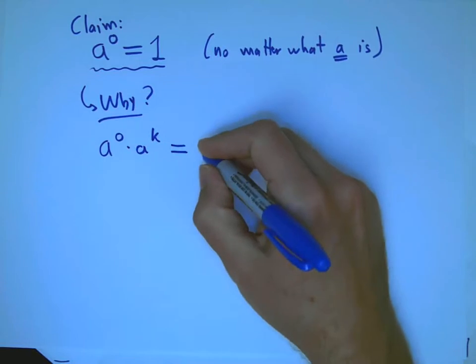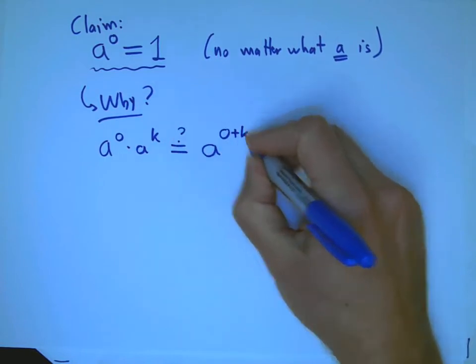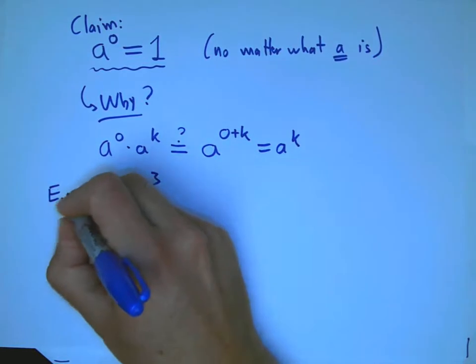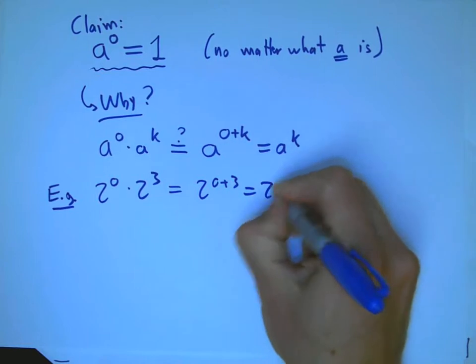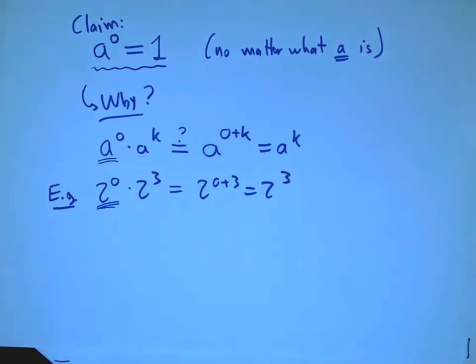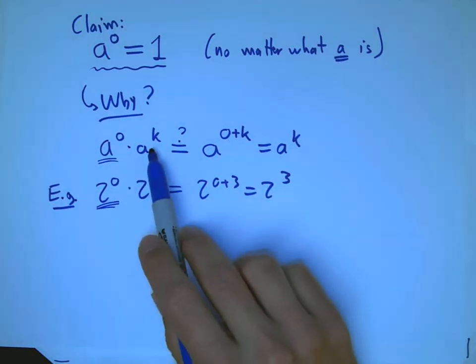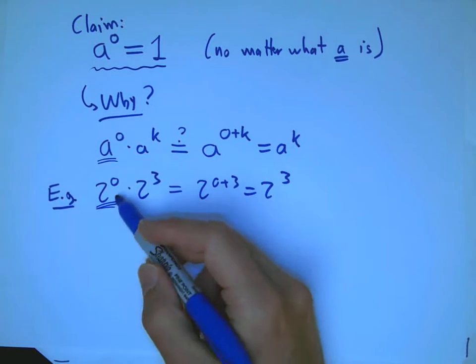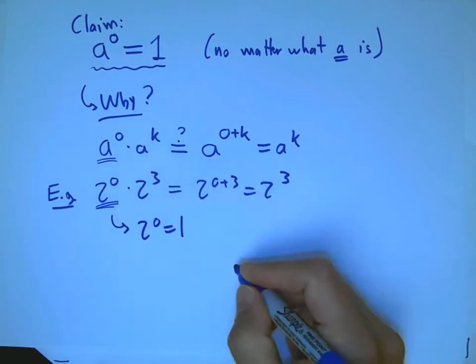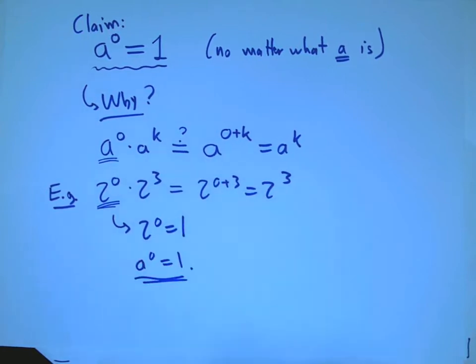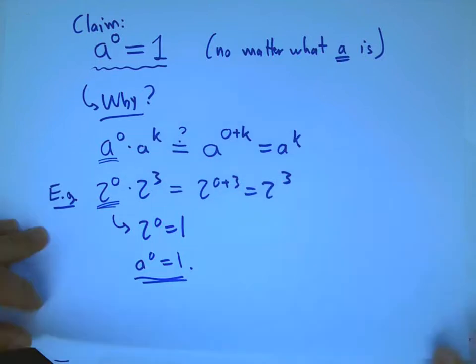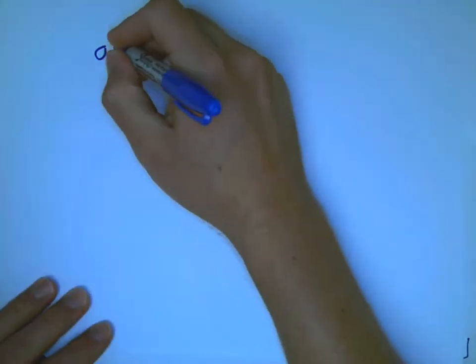Can we do that? A to the 0 times A to the K should equal A to the 0 plus K, which is just A to the K again. For example, 2 to the 0 times 2 to the 3 — that means 2 to the 0 has to be a magic number that when I multiply it by something, it doesn't change anything. For this times 2 to the 3, or 8, to still be 8, I must insist that 2 to the 0 equals 1, and in general A to the 0 equals 1. I'm not proving a theorem — I'm saying this is a really good reason to define A to the 0 to be 1.